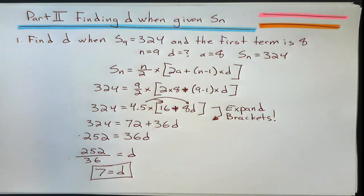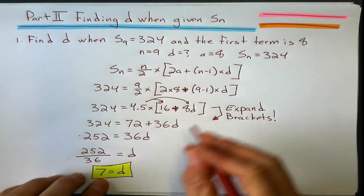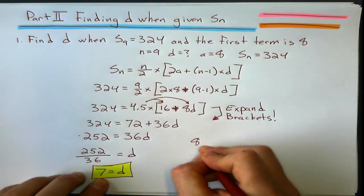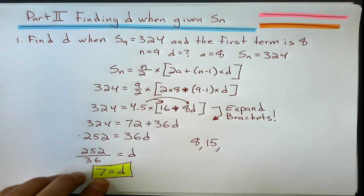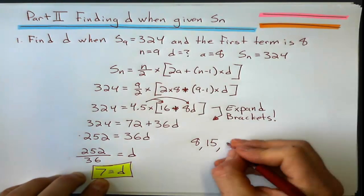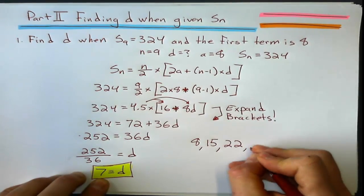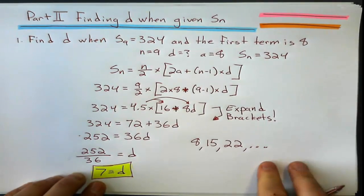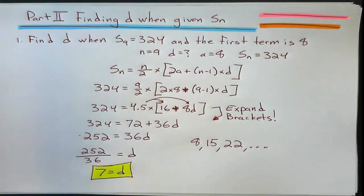What does that mean? It means my arithmetic sequence is going up by 7 each time. So if I were to write this out, my first term was 8 going up by 7, 15, going up by 7, 22, et cetera, and the first nine terms would add up to 324.